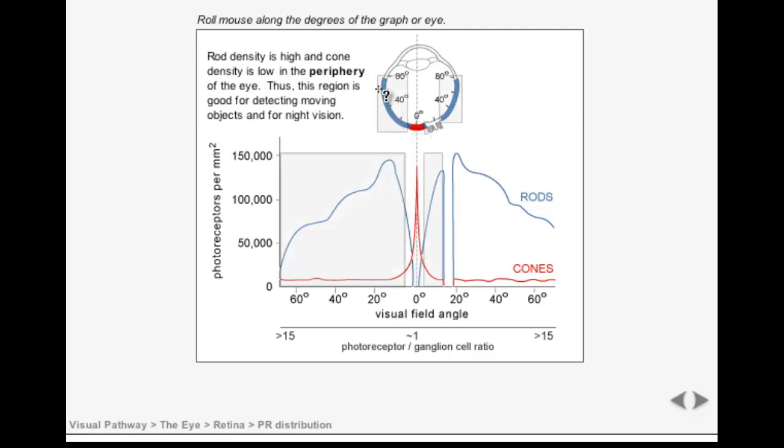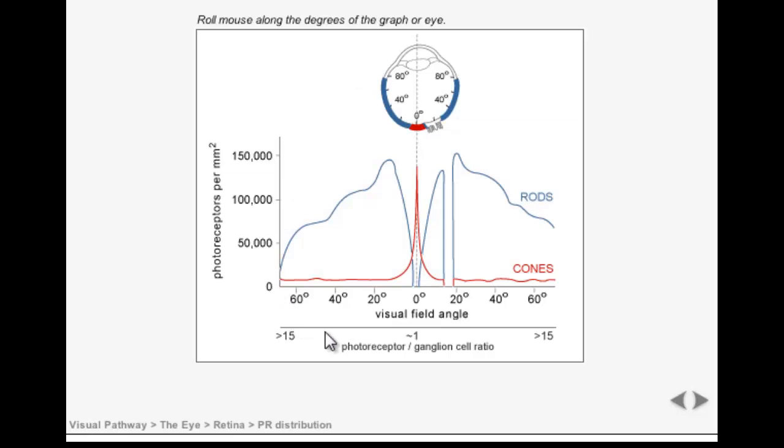You can also see that the ratio of photoreceptors to ganglion cells is 1 to 1 in the fovea, but increases as we travel away from the fovea. For this reason, cones provide more detailed information about a stimulus than rods do.